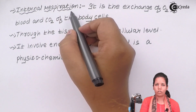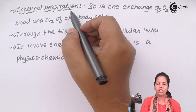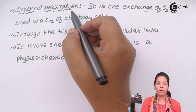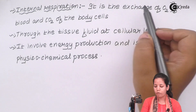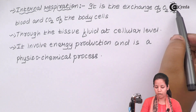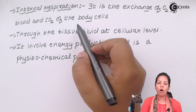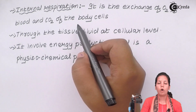Internal respiration is the process that takes place inside once oxygen reaches your respiratory tract, or once oxygen has been delivered to the required tissues and is already present inside your blood cells. In this process, there is an exchange of oxygen (O2) from the blood and carbon dioxide (CO2) from the body cells.